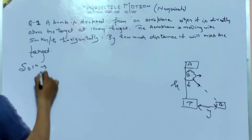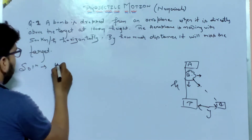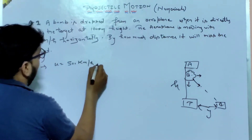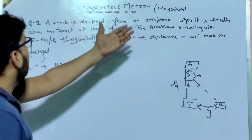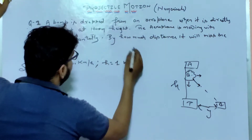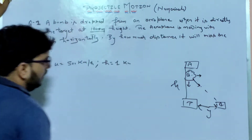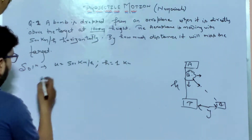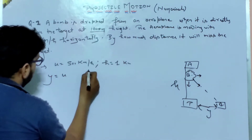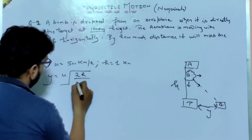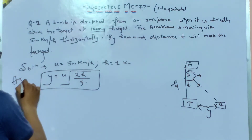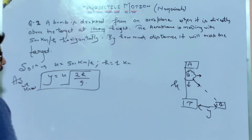Solution — the given part: u = 500 km/hour, and height h = 1 km = 1000 meters. The formula for horizontal displacement is: y = u × √(2h/g).